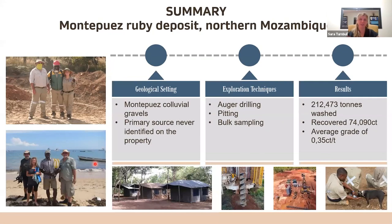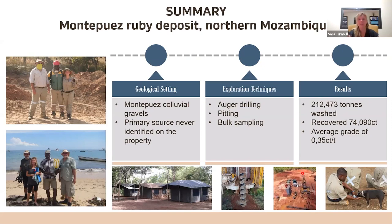The Montepuez ruby deposit was based on a colluvial gravel. The primary source was not our target — we never found it on our property — and were predominantly after the secondaries. The exploration techniques used were auger drilling, pitting, and bulk sampling. Our processing plant was a similar setup to the diamond plant — a scrubber, two 16-foot pans, and a concentrator where the picking team would recover the rubies from the concentrated material.